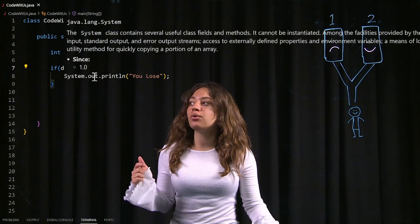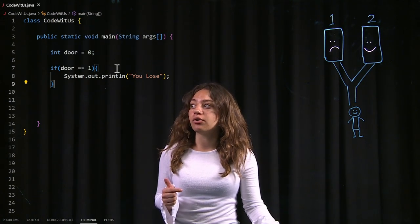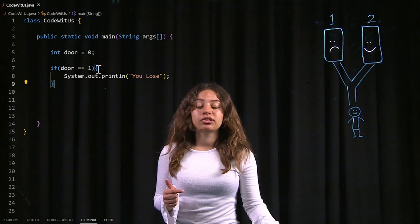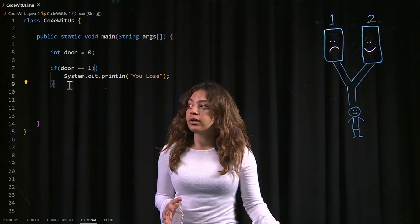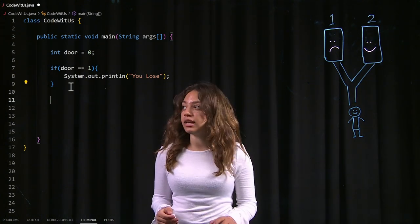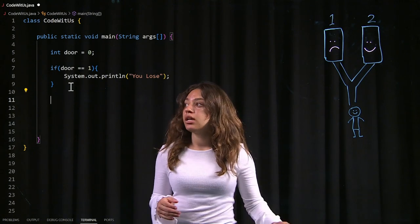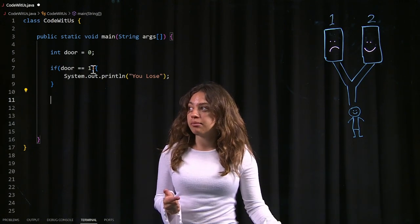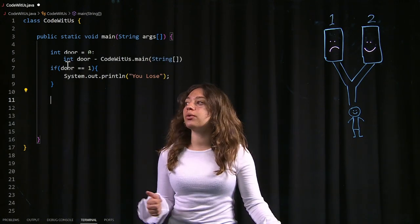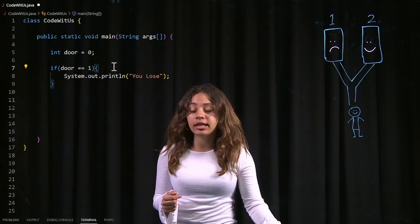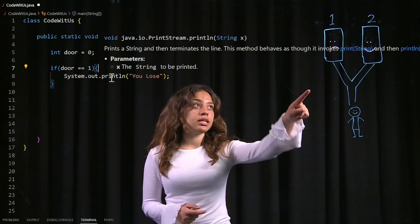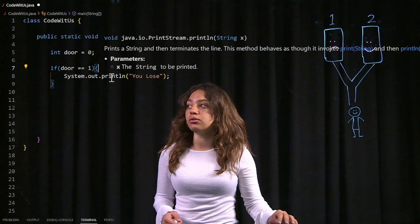it's going to do everything in this block of code right here. If this conditional statement is false, it's going to skip this block of code and continue with the rest of the program. So in this conditional statement, you see we are checking if the door we picked is equal to door number one. And if it is, we're going to print out you lose because that's a losing door.